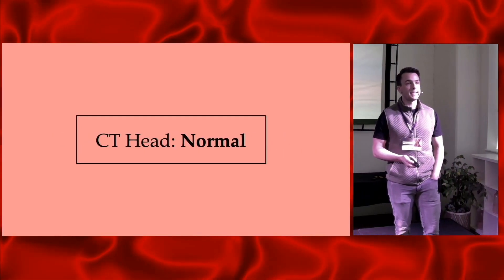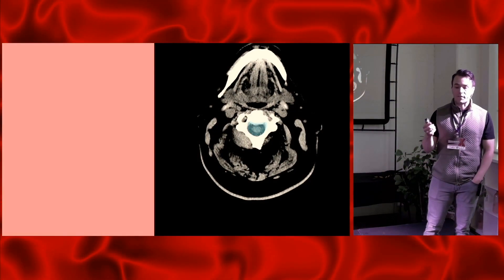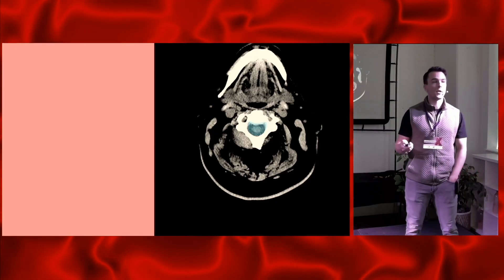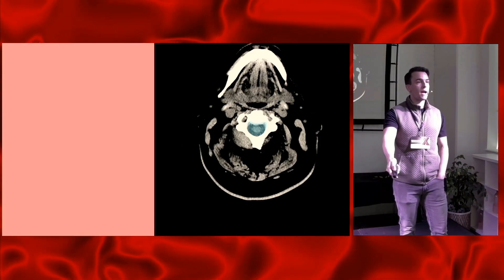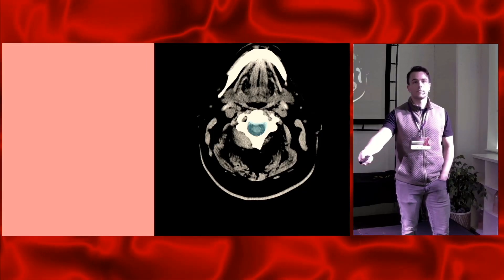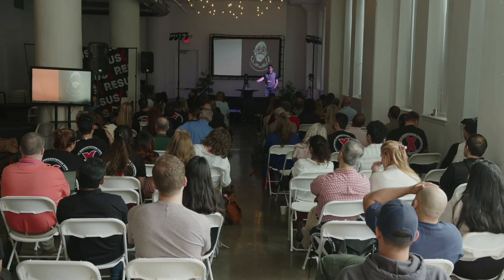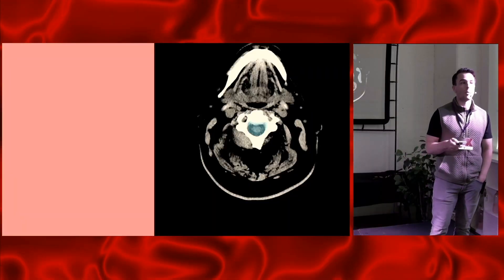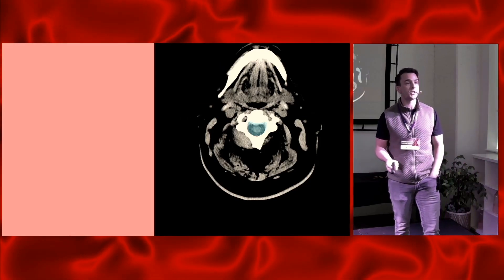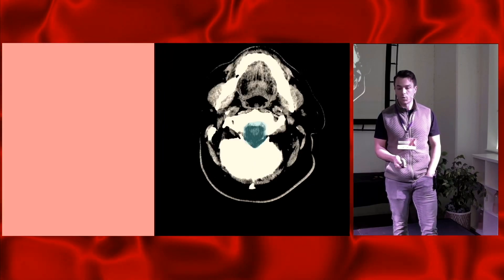Going through a normal CT head, highlighted in blue is where you focus in the quadrant approach. We're starting at the foramen magnum — where the brain stem sits. This is really important to start here because if a patient has a GCS of 3, you want to make sure they're not herniating into the foramen magnum.